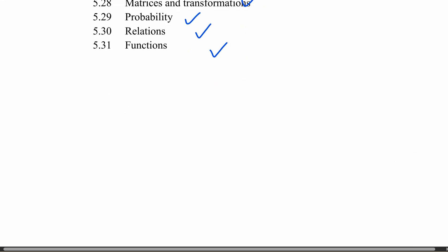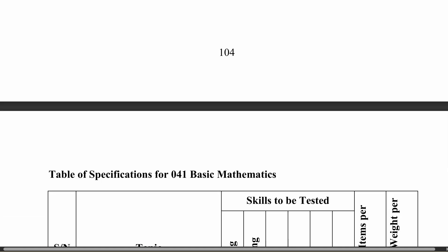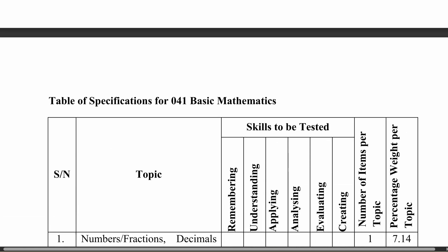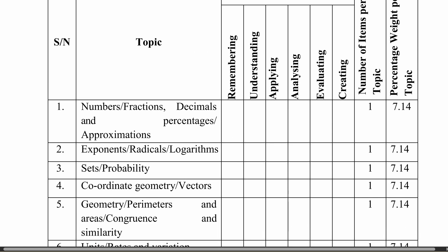Now we'll look at the table of specification — how the exam will be set and which topics each question comes from. Question 1 is on numbers, fractions, decimals and percentages, and approximations. Question 2 will be on exponents, radicals, and logarithms.